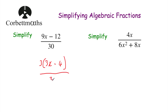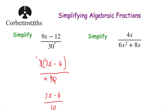We put that over 30. Now both the numerator and denominator are divisible by 3, so we divide both by 3. The 3 in the numerator divided by 3 is 1, and 30 divided by 3 is 10. So instead of writing 1 times the bracket, we just write 3x minus 4 over 10. So simplifying 9x minus 12 over 30 gives us 3x minus 4 over 10.